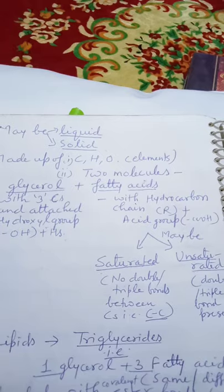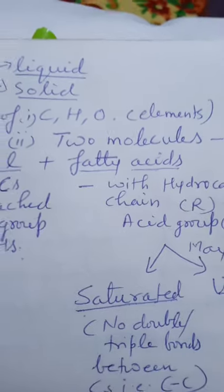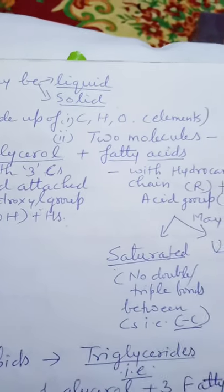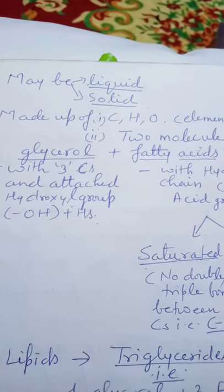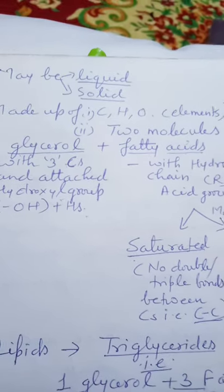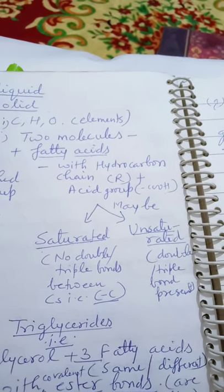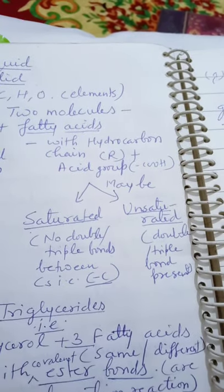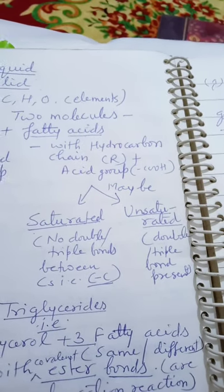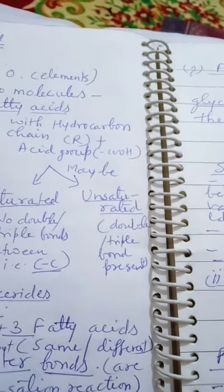When we consider the biochemical nature of lipids, they are made up of carbon, hydrogen, and oxygen. A typical lipid is made up of two molecules: glycerol, which is a three-carbon molecule with attached hydroxyl groups and hydrogens, and fatty acids, which are a hydrocarbon chain with an attached acid group. Fatty acids may be either saturated — no double bonds between carbon atoms — or unsaturated, having double or triple bonds.